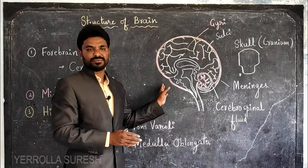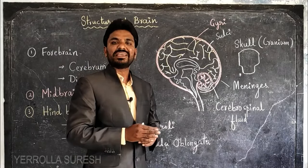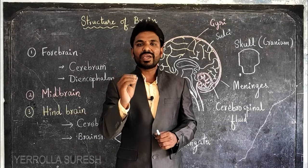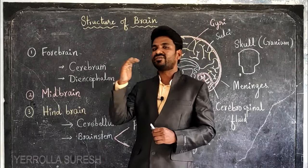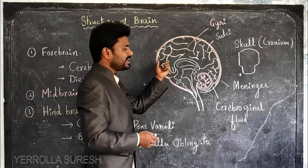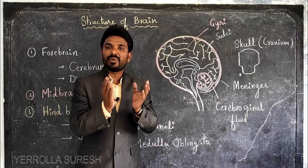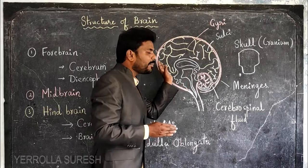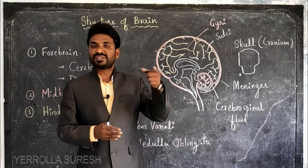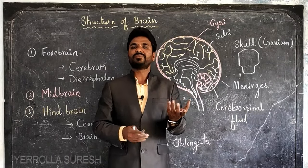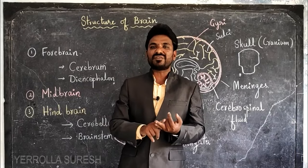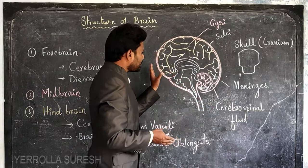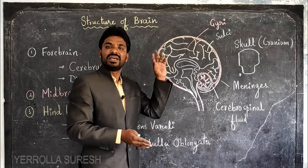Now regarding the structure: the surface or upper part of the brain is gray in color and is called gray matter. The reason is that the cell bodies of nervous cells exist on the surface of the brain. The brain is totally made of neurons, but the cell bodies exist in the upper part. Inside the cell bodies, Nissl granules are present, and due to their presence, the upper part of the brain appears gray. That is why it is called gray matter.